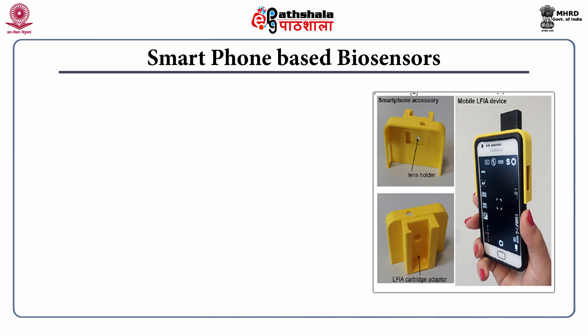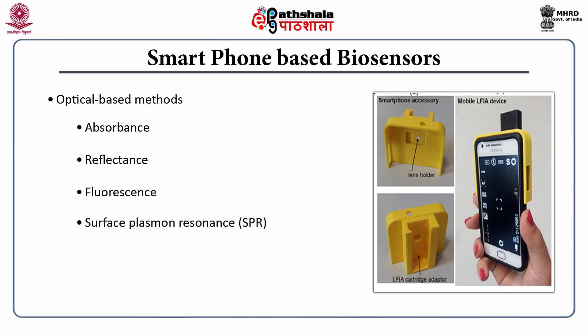Another advancement in biosensor technology is the integration of smartphones with biosensors. As smartphones have efficient cameras, these can be used as optical transducers to measure optical properties of the sample. Properties such as absorbance, reflectance, fluorescence, surface plasmon resonance, biochemiluminescence, and electrochemiluminescence can be monitored through these cameras. The only requirement is some accessories to place the sample close to the smartphone camera, which can capture the absorbance or other optical properties of the sample.